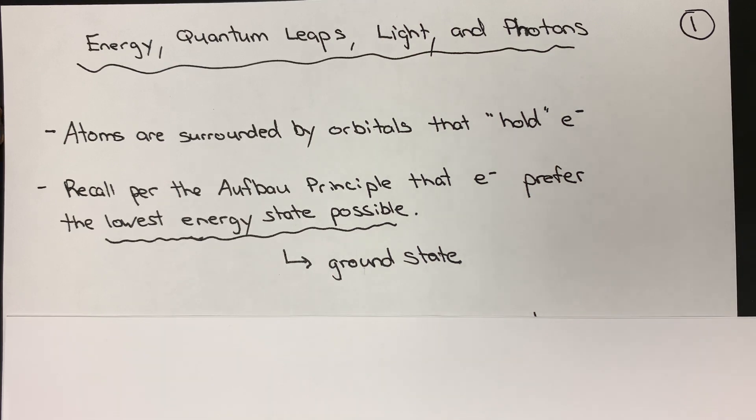Recall that atoms are surrounded by orbitals that hold electrons. This is Schrödinger's electron cloud model.